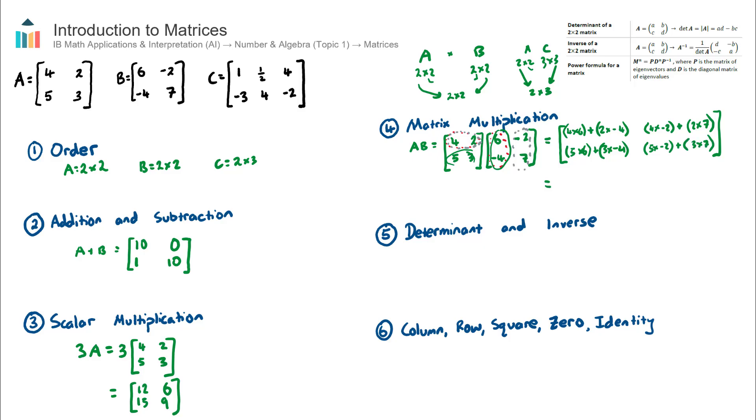And that will equal, this top left value will be 24 take 8 is 16. Top right value will be negative 8 plus 14 which is 6. Bottom left value will be 30 take 12 which is 18. And the bottom right value will be negative 10 plus 21 which is 11. So there we have it. We have multiplied 2 by 2 matrices together to get a matrix multiplication result.